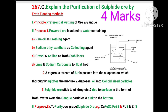Purpose: To purify low-grade sulphide ore. For example, copper pyrites (CuFeS₂) and iron pyrites. Also used to separate lead sulphide or zinc sulphide.